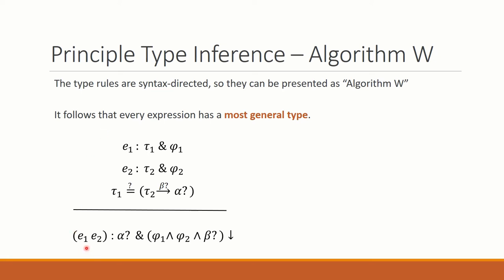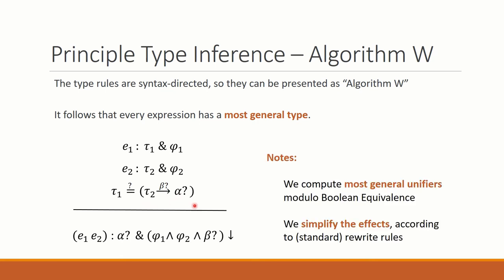I only illustrate this on application. Let's compute the type of an application e1 applied to e2. We recursively first compute the type and the effect of e1 and e2. Now, if we have the type tau1 for e1, then the application is only well typed if tau1 is actually a function type. So we get a unification problem checking if tau1 is equal to tau2 arrow something with the effect something else. In order to solve this unification problem, we need to do most general unifiers modulo boolean equivalents, and that's why we apply boolean unification.